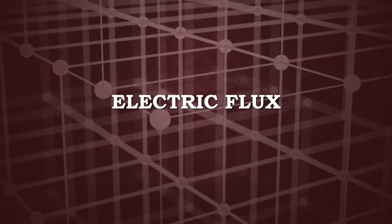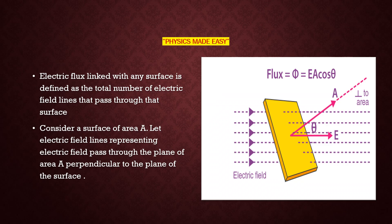In this video, first of all, we are going to study about electric flux. So first of all, we consider a surface having an area capital A. Here are the electric field lines that are crossing through this area, creating the electric field here. Electric flux is defined as the number of electric field lines that pass through a particular area. Electric flux is always linked with the surface through which electric field lines are passing.